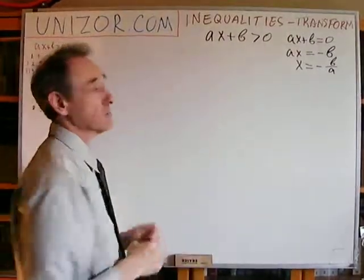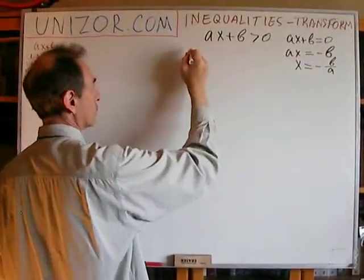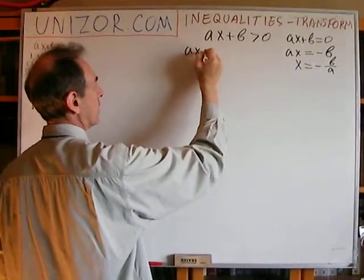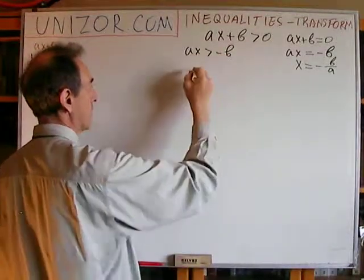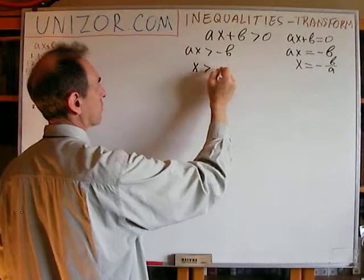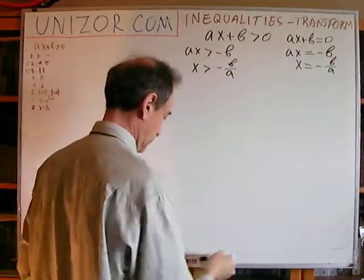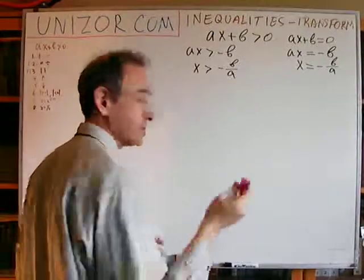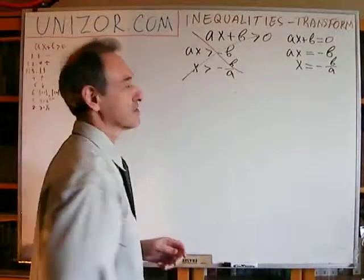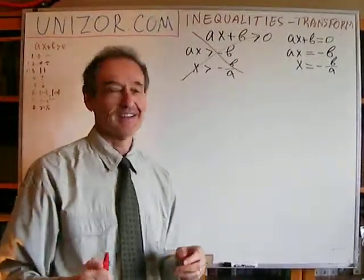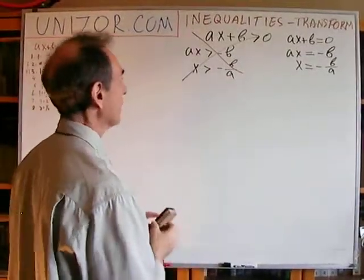Now let's do the same thing with the inequality. We add minus B to both sides and we will have Ax greater than minus B. Then we divide by A both sides. We will have x greater than minus B over A. Now I'm in the red pen — is it right? No, this is wrong. It's completely wrong. Let me just give you an example why it's wrong.